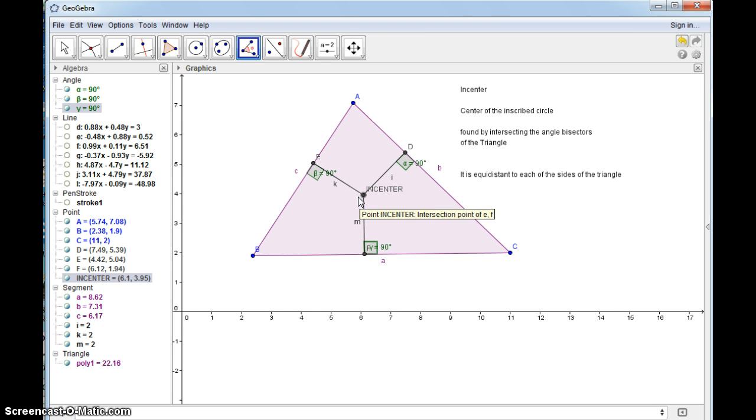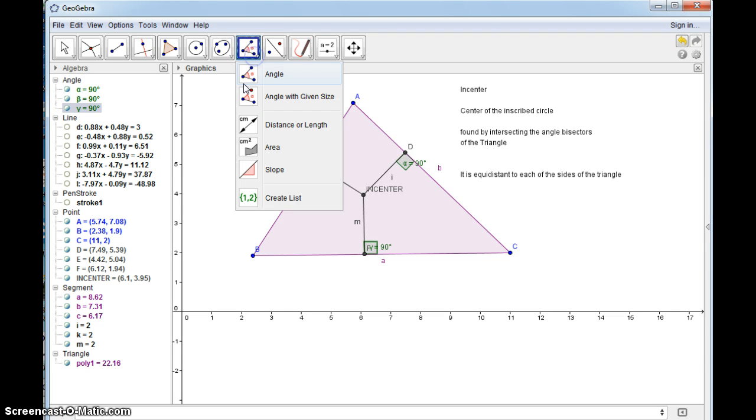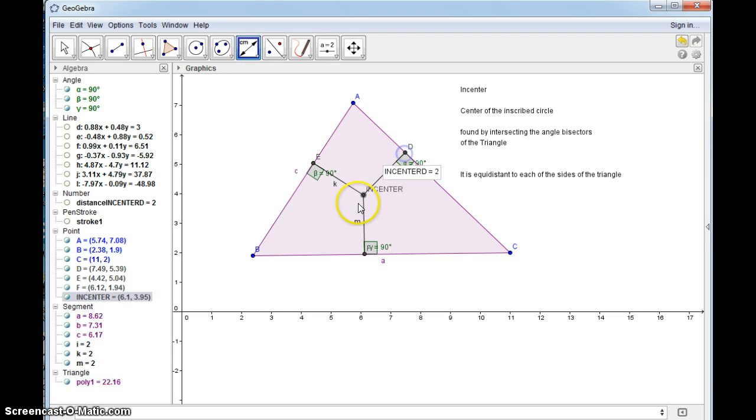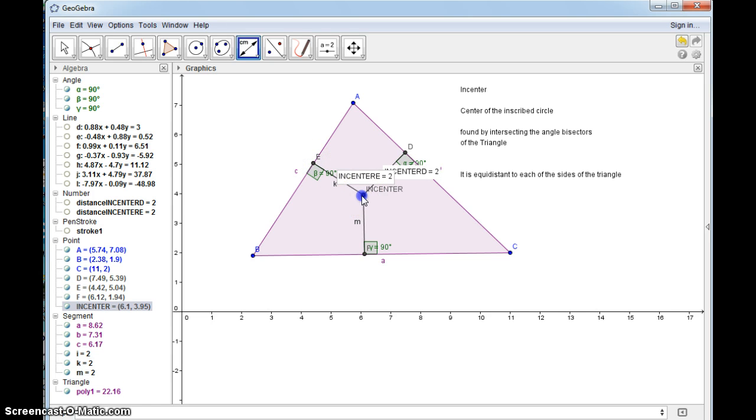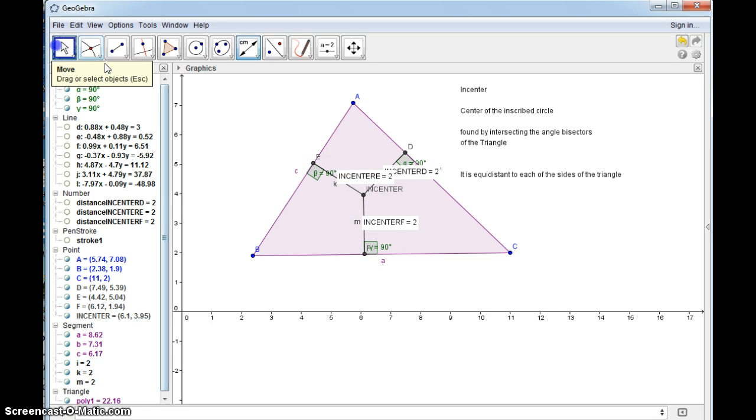This doesn't show as equidistant until I find the distance using the distance formula. It's built into our calculator in algebra. And I can move these around. They're all the same.